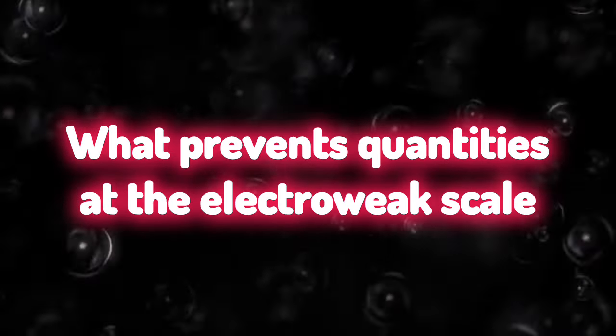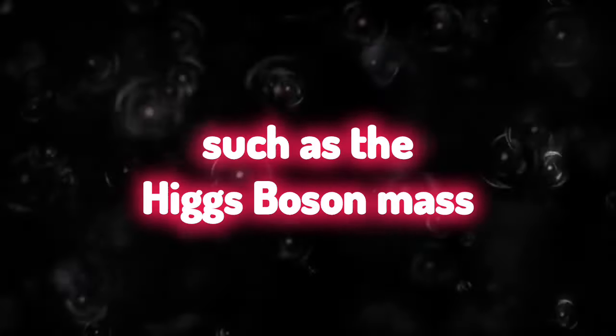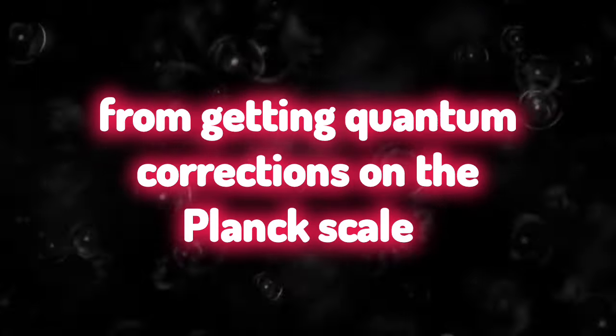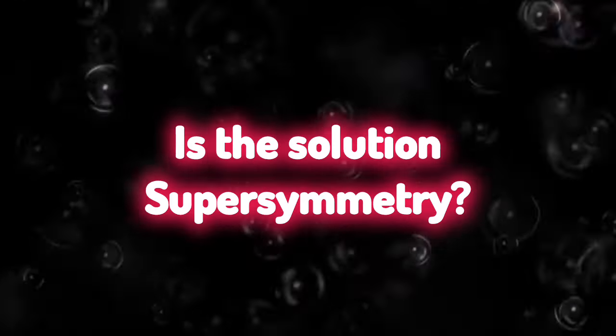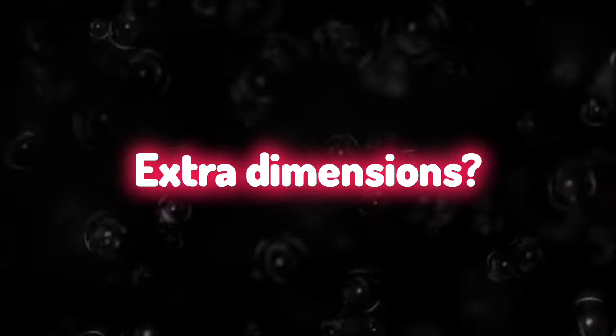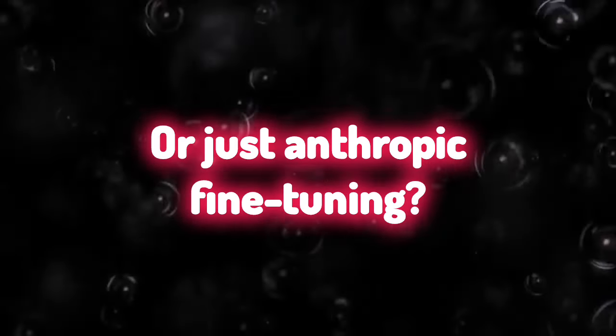What prevents quantities at the electroweak scale, such as the Higgs-Boson mass, from getting quantum corrections on the order of the Planck scale? Is the solution supersymmetry, extra dimensions, or just anthropic fine-tuning?